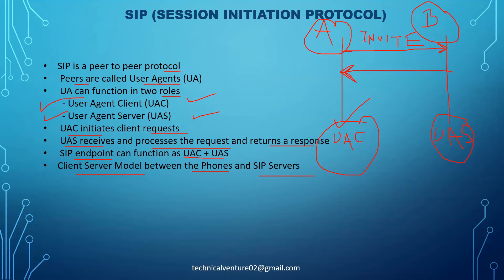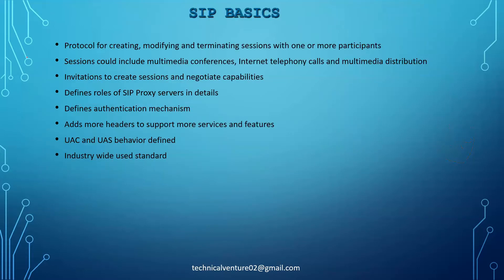Phone A sends an invite to Phone B, and Phone B should send a response back. The response to an invite is primarily '100 Trying', so that Phone A knows its invite message was received by Phone B and doesn't need to resend it. Phone A receives the '100 Trying' response from Phone B confirming receipt.